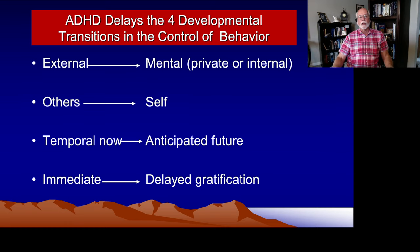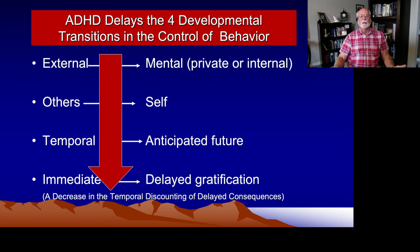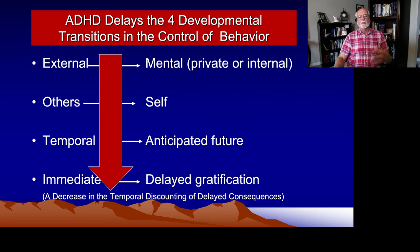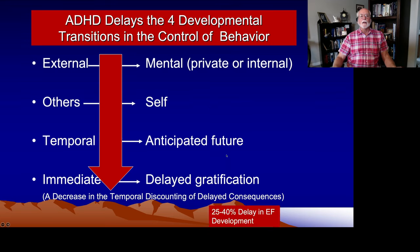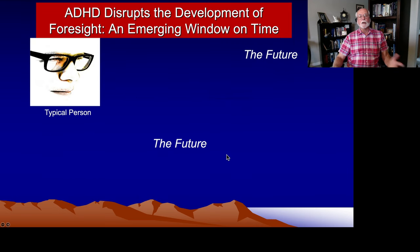ADHD results in about a 30 percent or more delay in the transition across these four dimensions of behavioral control — specifically those dealing with the window on time and with immediate versus delayed gratification. People with ADHD have their behavior governed more by the immediate side, whereas other people of the same chronological age are governed more by the future-oriented side.